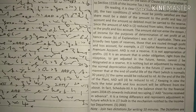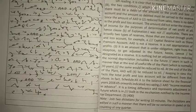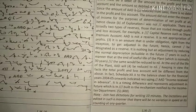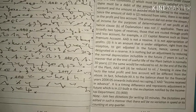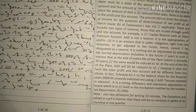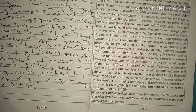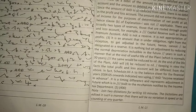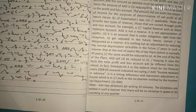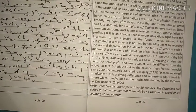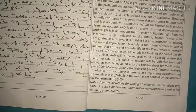There are broadly two types of reserves — those that are routed through the profit and loss account, for example, a capital reserve such as share premium account. AAD is not a reserve. It is not an appropriation of profits. It is an amount that is under obligation, right from the inception, to get adjusted in the future; hence it cannot be designated as a reserve. It is nothing but an adjustment by reducing the normal depreciation.